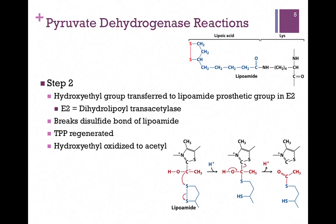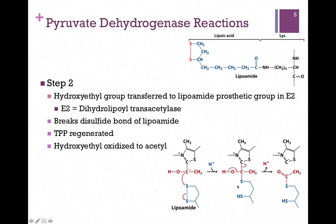Now we're ready for step 2. Enzyme 1 is going to pass that hydroxyethyl group to the cofactor for E2. The name of the enzyme is dihydrolipoyl transacetylase, but E2 is fine. Its cofactor is lipoamide, pictured at the top of the screen. It's a lipoic acid attached to a lysine side chain on the enzyme — a permanent prosthetic group. The functional part has two red sulfur atoms forming a disulfide bond, which is key for its function. The hydroxyethyl group is passed from E1 to that lipoamide cofactor, and as it does so, the group becomes oxidized to form the acetyl group. This is the first function of E2: to oxidize the hydroxyethyl to acetyl.